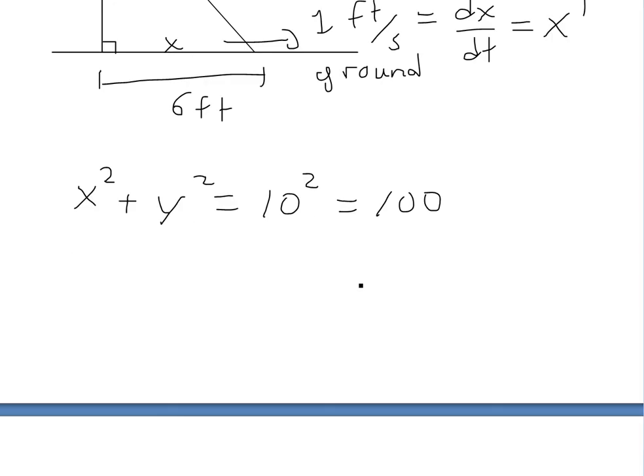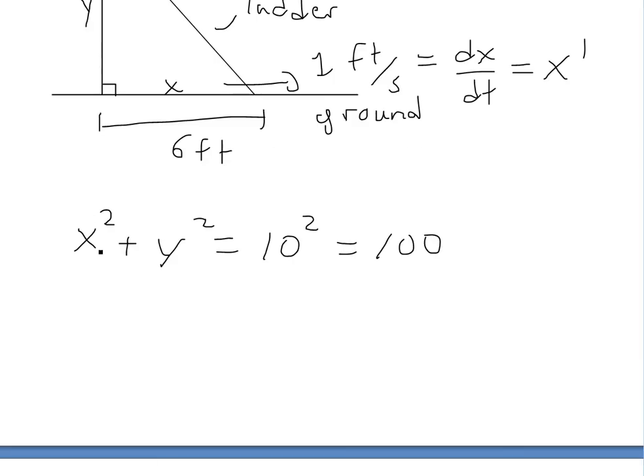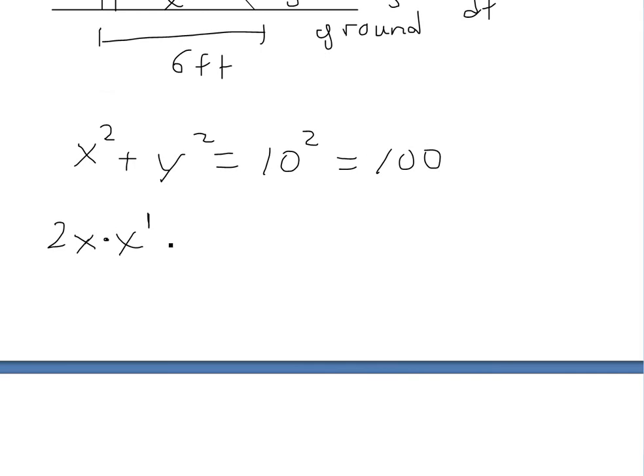Now we could take the derivative on both sides using implicit differentiation. We take derivative on both sides in terms of t, the time. So we'll have using power rule 2x, and then we have to use chain rule because x is a function of t, and this is going to be x prime, which is dx over dt, plus 2y y prime, and then the right side is equal to 0.